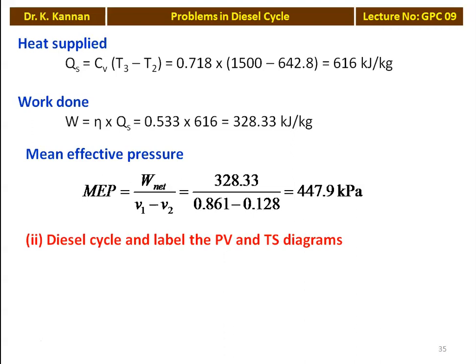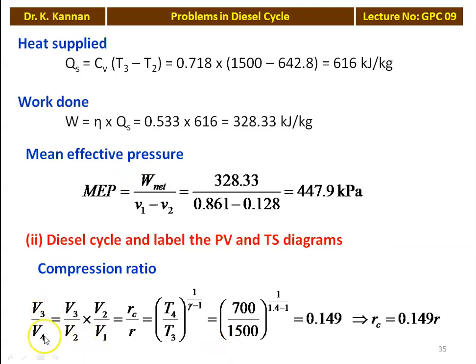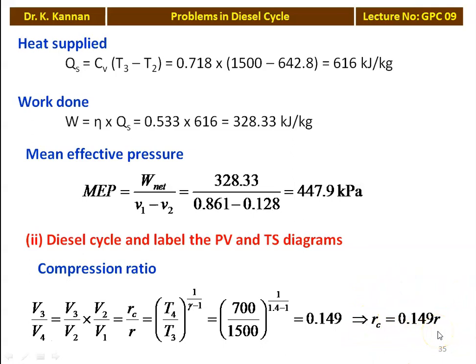Now we take the Diesel cycle. For the compression ratio, we use the expansion process relationship: V3/V4 equals (V3/V2) into (V2/V1), where V4 equals V1 for the constant volume heat removal process. So V3/V4 equals Rc/R. This equals (T4/T3) to the power 1/(gamma minus 1) by 1/(1.4 minus 1) equals 0.149. Therefore Rc equals 0.149 times the compression ratio R.